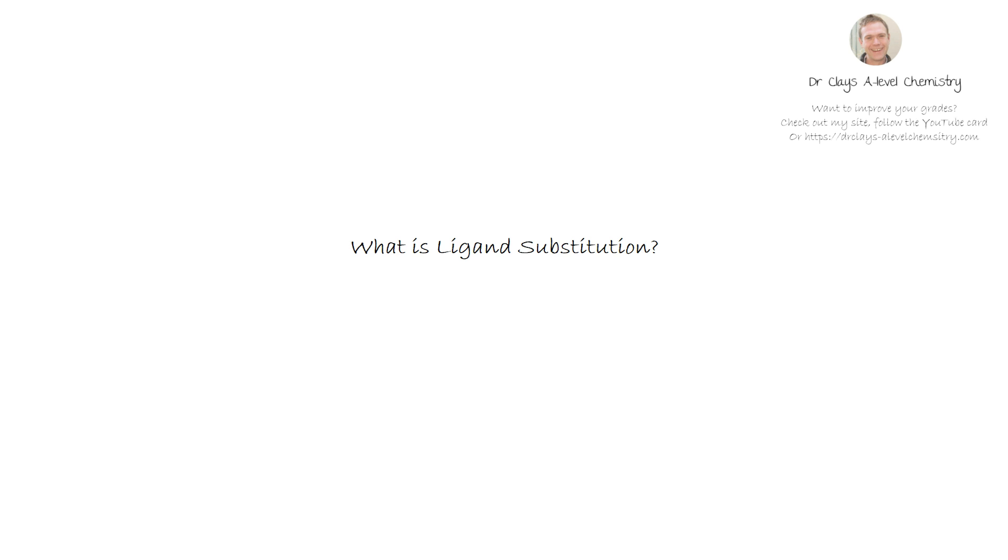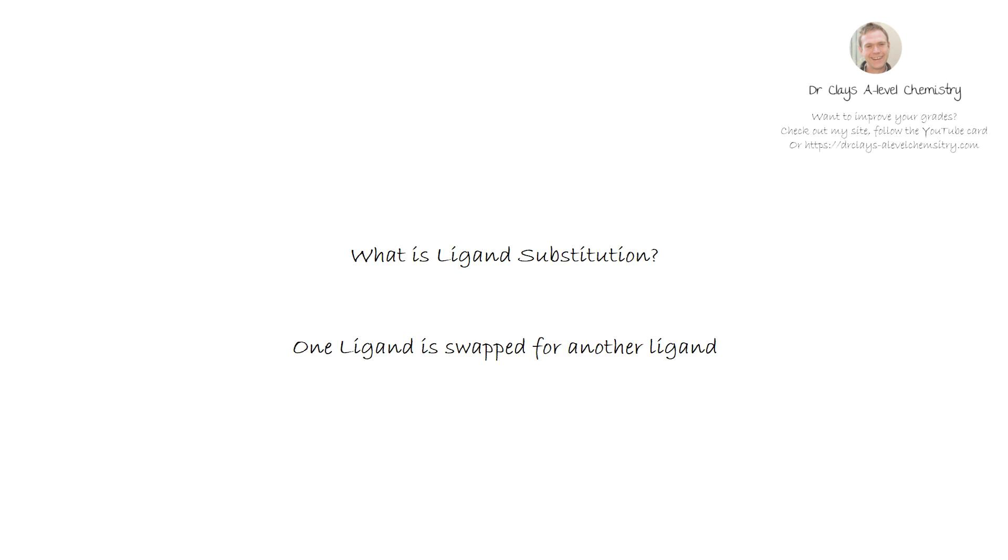Before we go any further let's just decipher what we mean by a ligand substitution. It is simply the case when one ligand is swapped for another ligand. Since there is a change in ligand there is a change in the energy gap between the two d orbitals and therefore a colour change is often observed when we change the ligands in a complex.